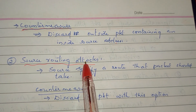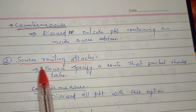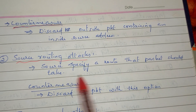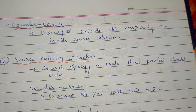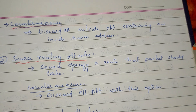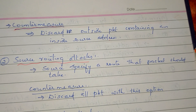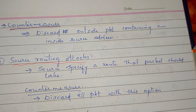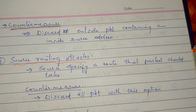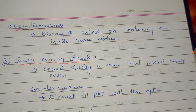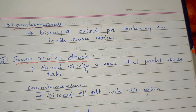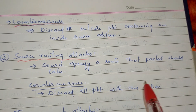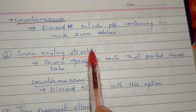Next is the Source Routing Attack. The source specifies a route that the packet should take — the packet is transmitted along a particular path to the destination. To eliminate this, discard packets that use the source routing option.